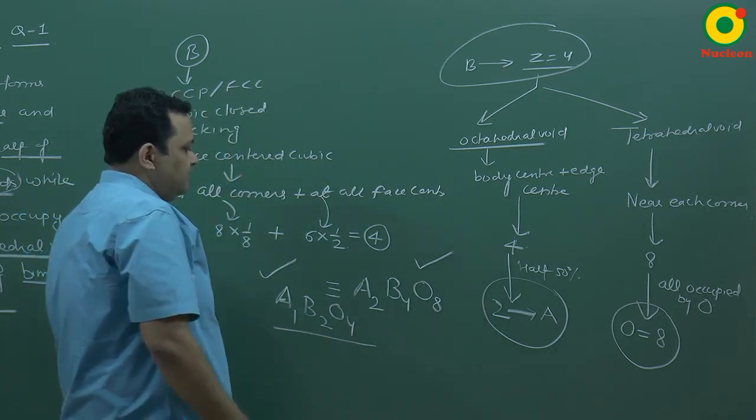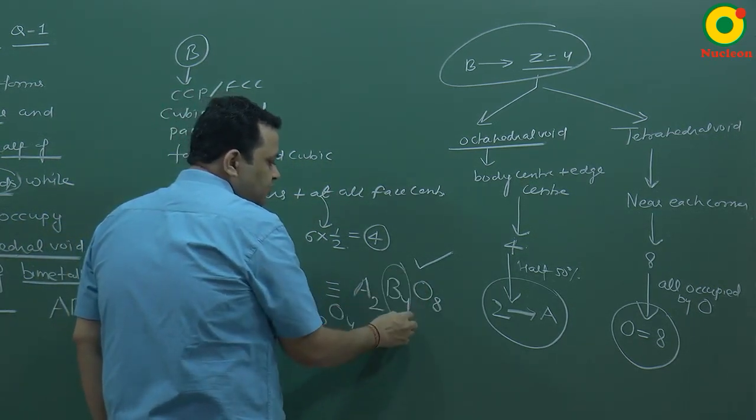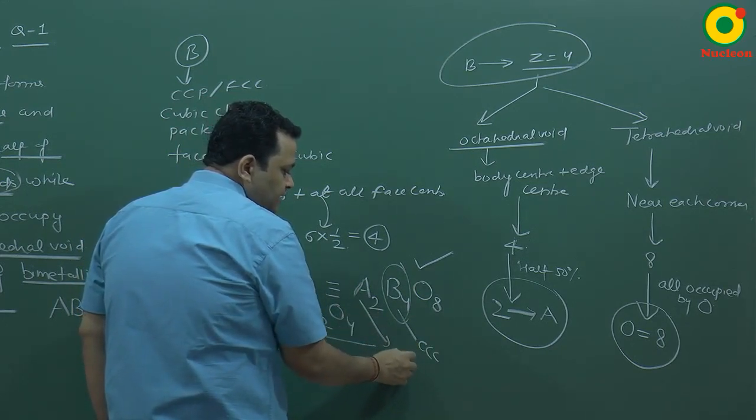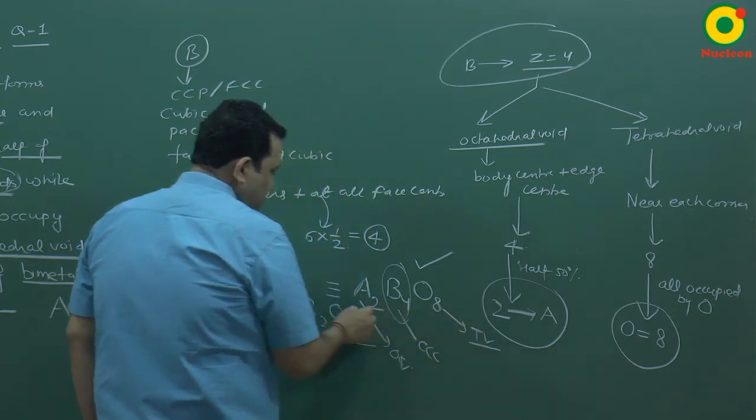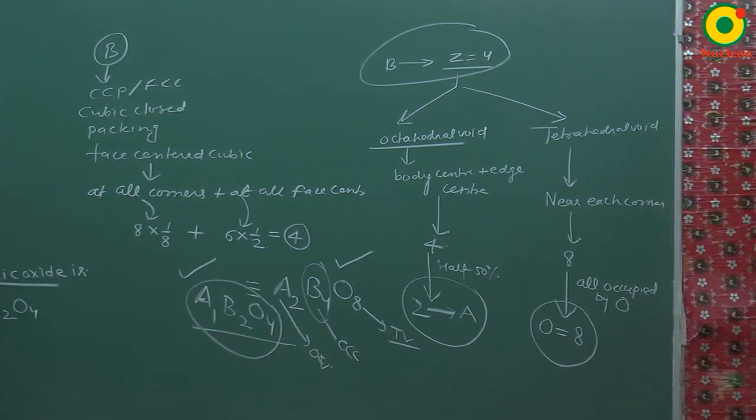So, the question was in the formula I had to know, and I already said that B is the CCP and this is the octahedral voids and this is the tetrahedral voids. The answer is AB2O4.